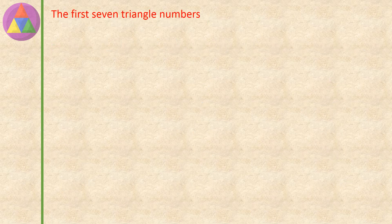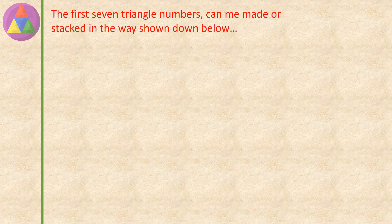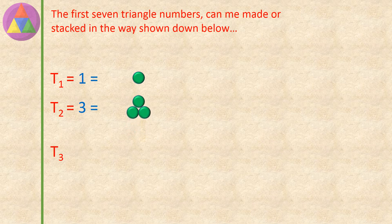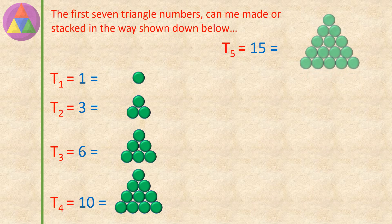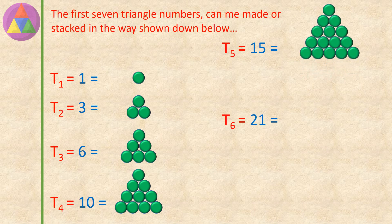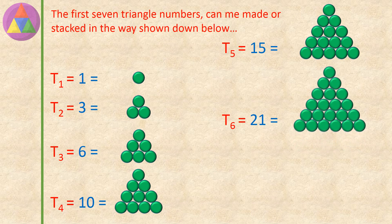The first 7 triangle numbers can be made or stacked in the way shown below. T1 equals 1, T2 equals 3, T3 equals 6, T4 equals 10, T5 equals 15, T6 equals 21, and T7 equals 28 — each can be arranged in the form of a triangle.